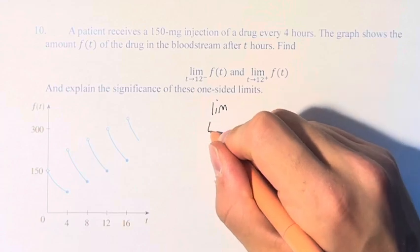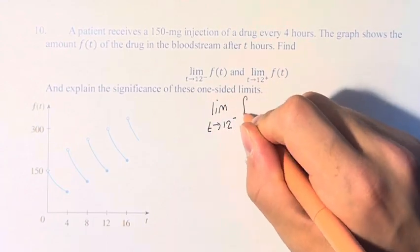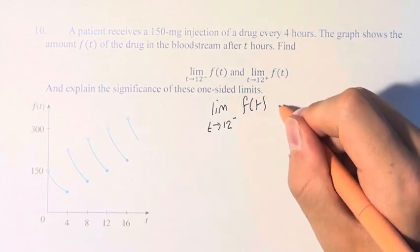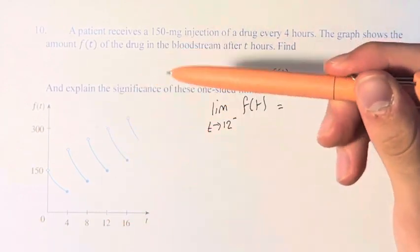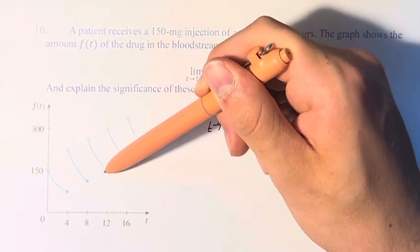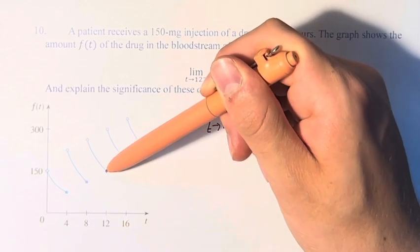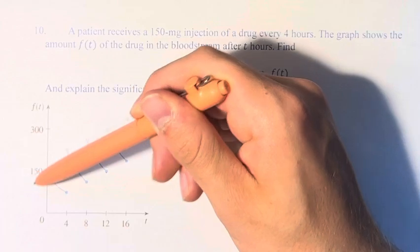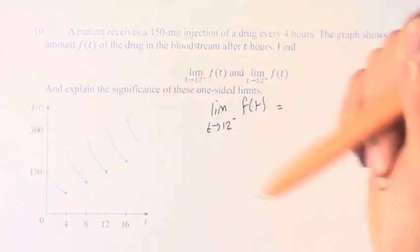We have the limit as t approaches 12, and this minus sign means from the left of f(t). t equals 12 is right here, and we can see that the function, as we're coming from the left, is approaching this value right here. We have a value in the y-axis, which is represented by f(t), of 150.